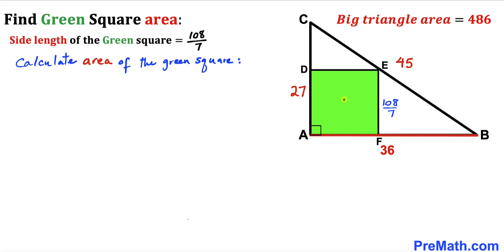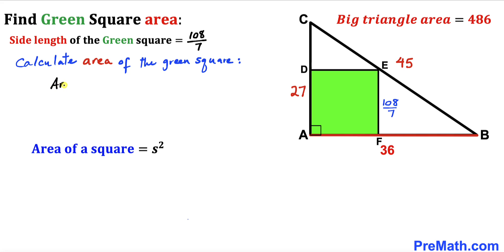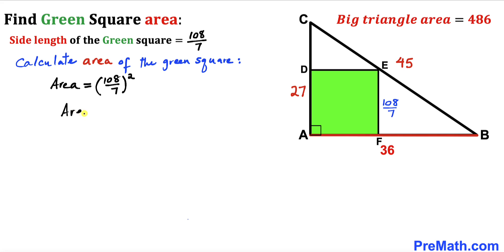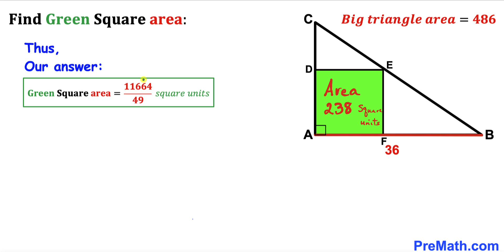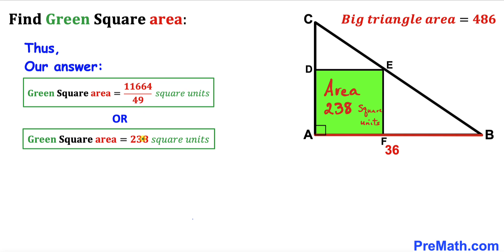Now let's calculate the area of the green square. Recalling the area of a square formula: Area equals S squared, where S is the side length. Our side length is 108 divided by 7, so the area equals 108 divided by 7, whole squared. Therefore the area of the green square is 11,664 divided by 49 square units, which is approximately 238 square units. That's our final answer.